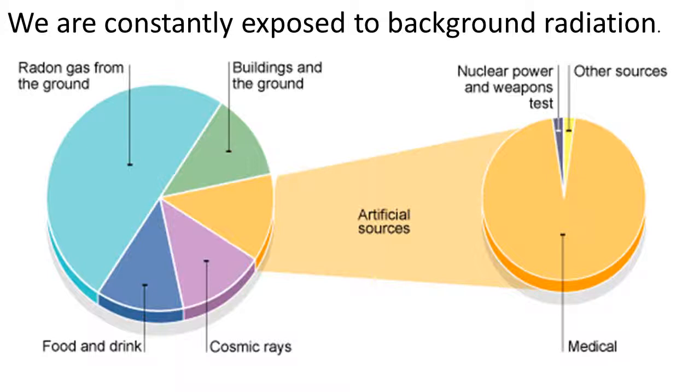You can see a large chunk on this pie chart is radon gas from the ground. What happens there is in rocks like granite, and there's a lot of that in places like Devon and Cornwall and Scotland, you get uranium. So you've got uranium in rocks and this decays into other radioactive substances like radon gas. And what can happen is that can seep up into people's houses where it builds up and people can breathe it in. So people are breathing in this radioactive gas.